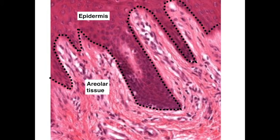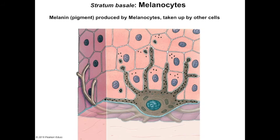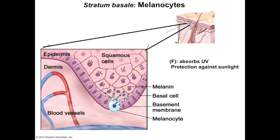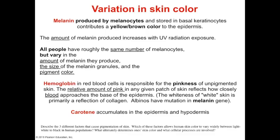Also within the stratum basale are an entirely different type of cells called melanocytes. Melanocytes produce the pigment melanin, which is taken up by the surrounding cells of the stratum basale and stratum spinosum. What the pigment does is protect the DNA in the nucleus from UV damage, which may cause mutations leading to cancer and other abnormalities. Melanin comes in a few different shades, from yellow to oranges to various shades of brown. UV radiation stimulates the production of melanin and is the reason you get a tan. The variation in skin color is not due to the number of melanocytes but rather how much melanin a person produces, the size of the melanin granules, and the particular color.